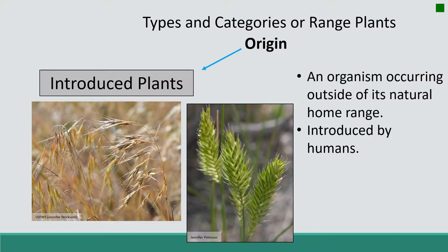Since the discovery of America in the 15th century, people have played a very significant role in moving plants, animals, diseases, and other organisms around the world to places far beyond their native home range. Right now it's estimated that there are approximately 3,500 species of plants that have escaped cultivation and become established and naturalized in native ecosystems.